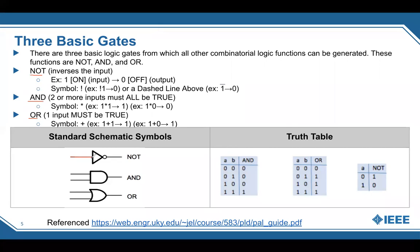A NOT gate is the first one. It looks like a triangle, and then there's a circle at the end. If I have a signal of zero, it goes through and this little bubble changes the output — it flips the output from the input, changing it to one. Similarly, if we put a one in, it flips to zero. So the NOT gate does exactly the opposite of what you input.